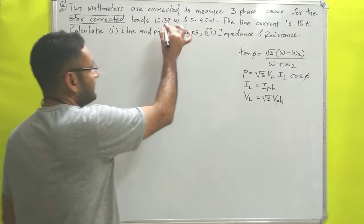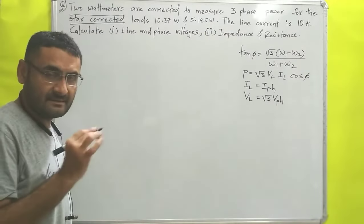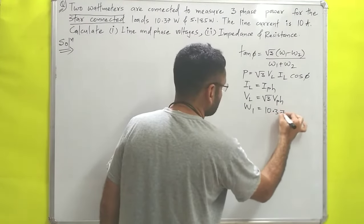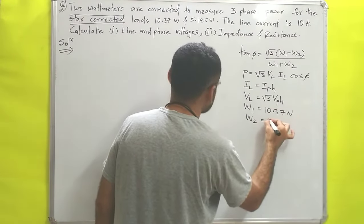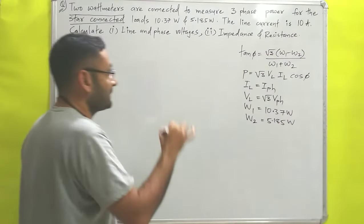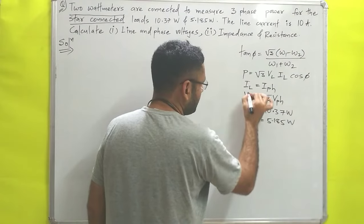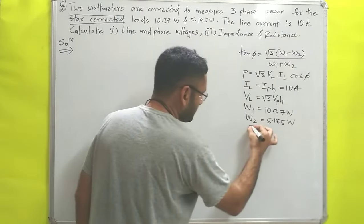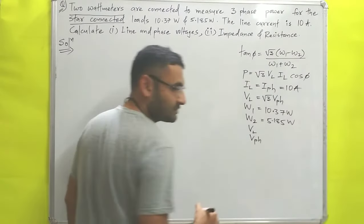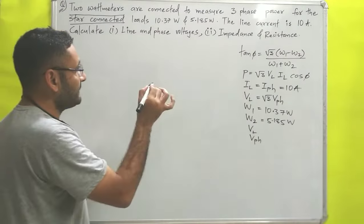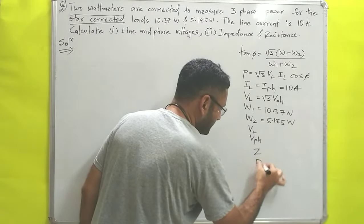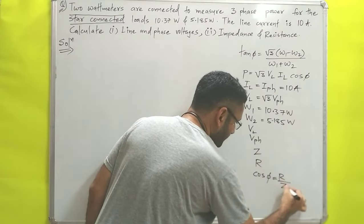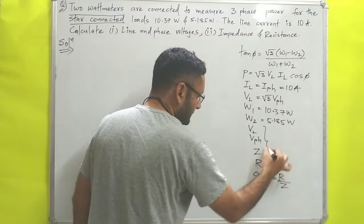The readings given by both watt meters are: W1 = 10.37 watts and W2 = 5.185 watts. The line current is 10 amperes, which means line current equals phase current = 10 A. We need to calculate: line voltage VL, phase voltage VPH, impedance Z, and resistance R. We know that power factor cos φ = R / Z.